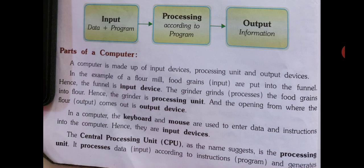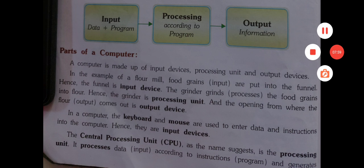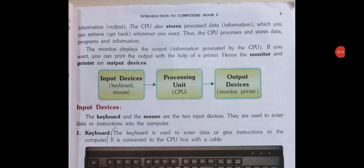In the computer, the keyboard and the mouse are used to enter data and instructions — computer mein jo keyboard aur mouse jo rehte hai woh hum data enter ya instruction enter karne ke liye use hote hai, hence they are the input devices. The Central Processing Unit — as the name suggests, the processing unit processes data. Jo CPU hota hai, computer mein jo baju mein bada wala dabba rehta hai — usmein pura ka pura jo data hum input dalete hai woh process hota hai according to instructions.